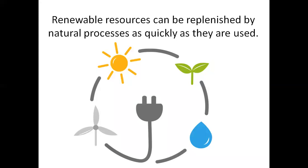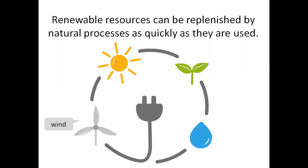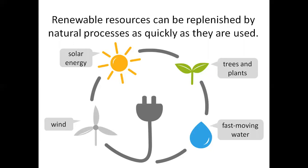Renewable resources can be replenished by natural processes as quickly as they are used. Replenished means made full again. Examples include wind, solar energy, trees and plants, and fast-moving water. These renewable resources give us what we call green energy.